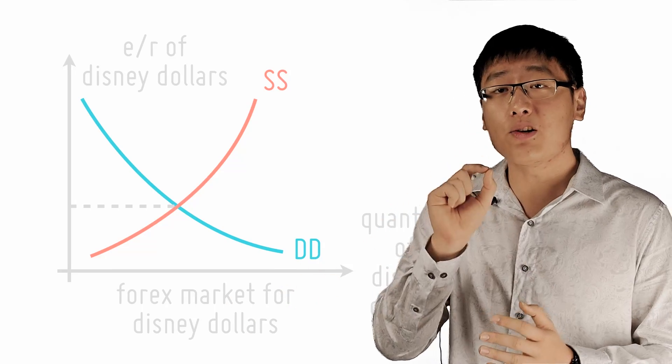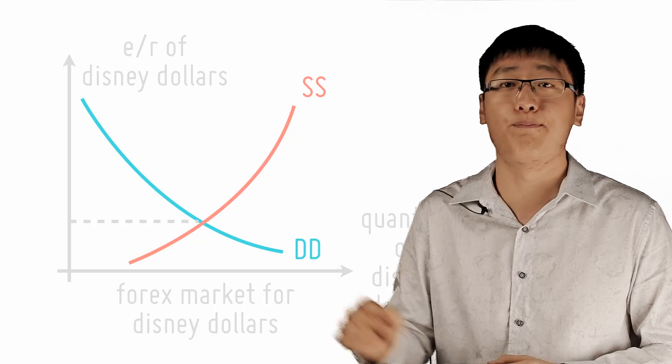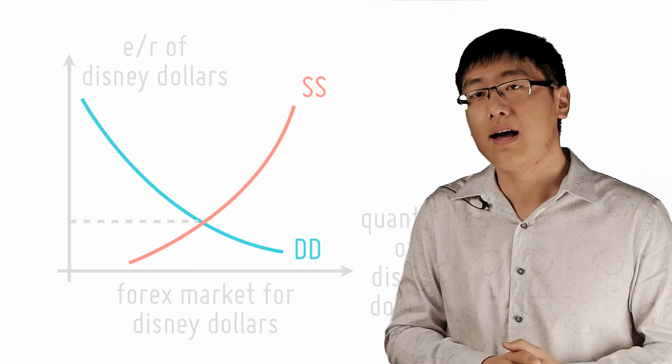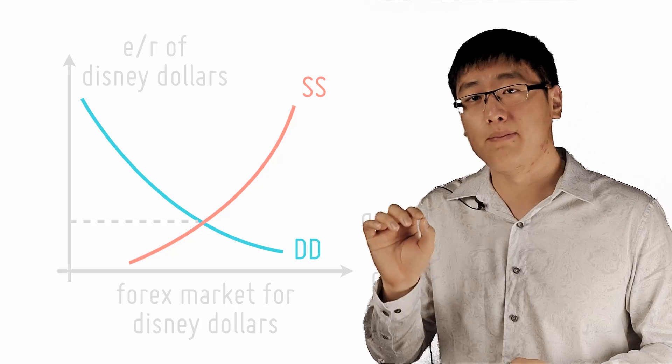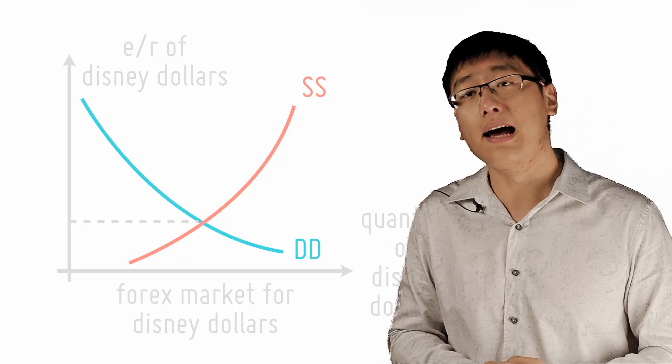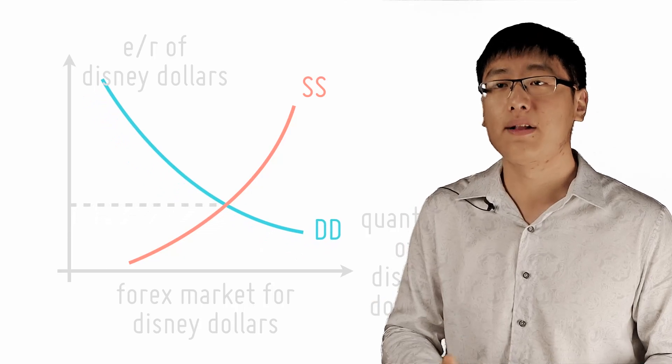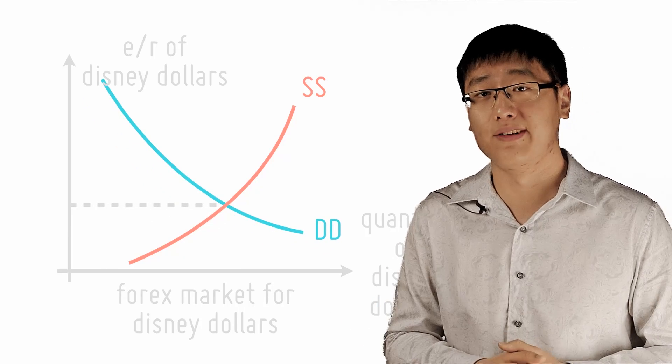However, this increases the supply of Disney dollars on the forex market and puts downward pressure on the Disney dollar. The Disneyland government wishes to maintain a fixed exchange rate, hence it will sell foreign currency from its foreign reserves to buy back Disney dollars that are in circulation, in effect increasing the demand for Disney dollars.